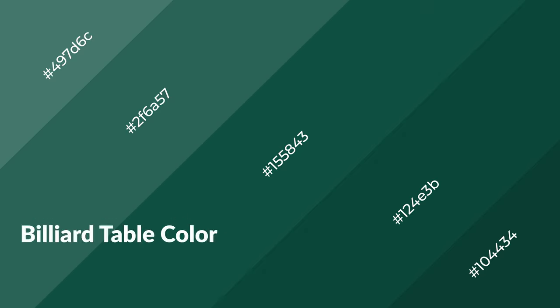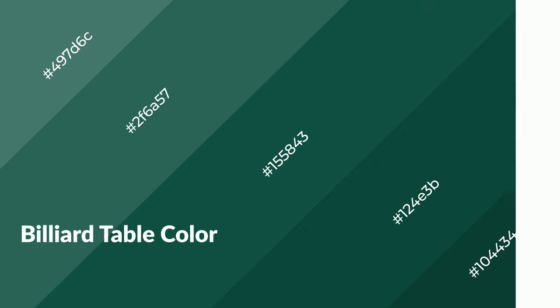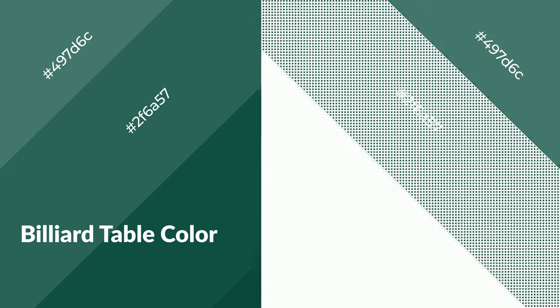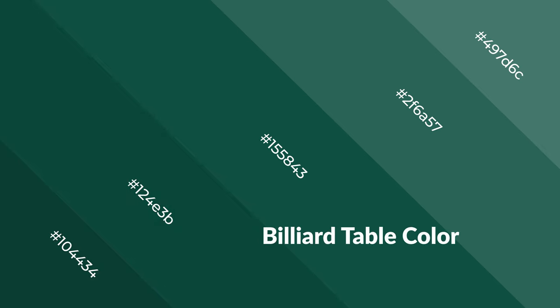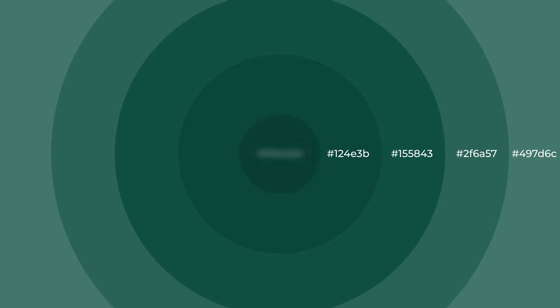Billiard table is a cool color and it emits calming, serene, soothing, refreshing, spacious, unwinding, peaceful, and relaxed emotions. Cool colors are like water, ice, sky, grass, soft, and snow. You can see them used in baby products.